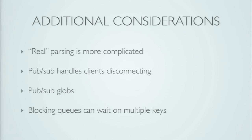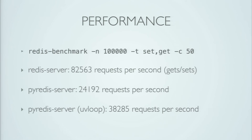Last thing: performance. There's a Redis benchmark program that comes with Redis. On my laptop, the Redis server got about 82,000 requests per second. For my PyRedis server, I got 24,000 initially. I was at a talk about UV loop, so I tried plugging it in with no changes and it brought it up to 38,000 requests per second — I thought that was really cool. We're a little more than two times slower with very unoptimized code. When I profiled, it was mostly in my parsing code, which can be optimized quite a bit.